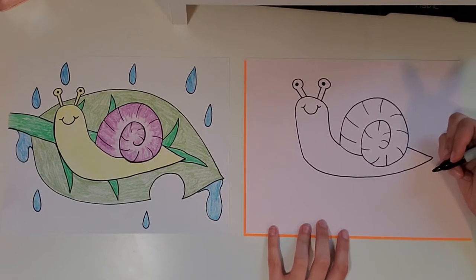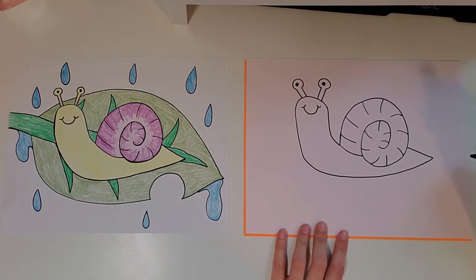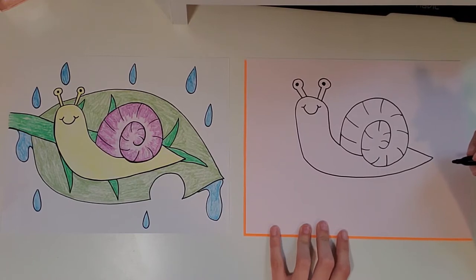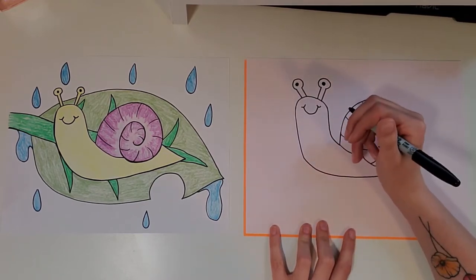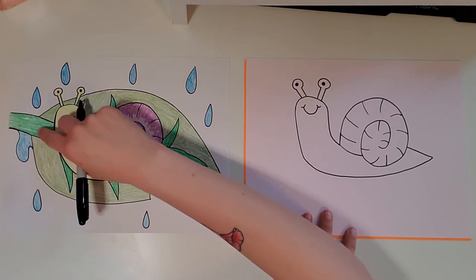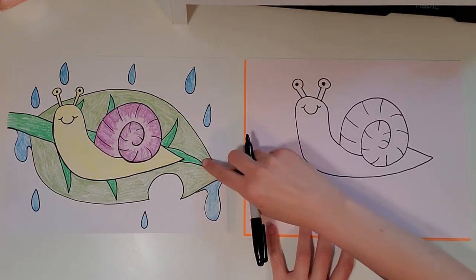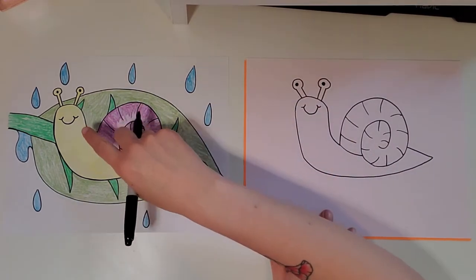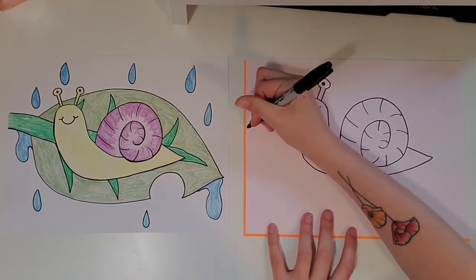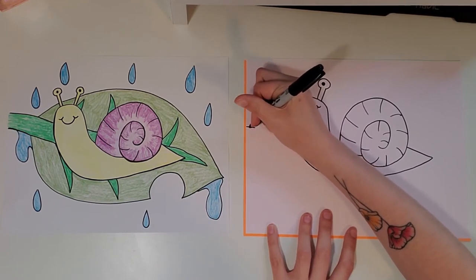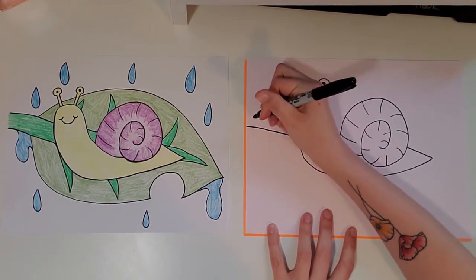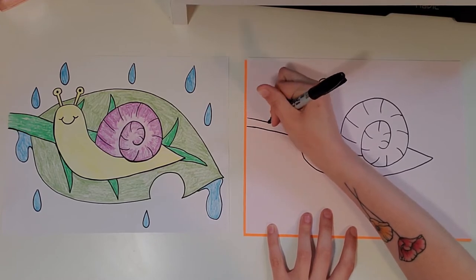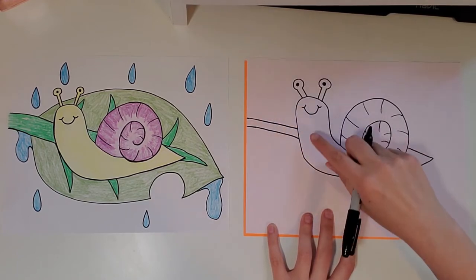Now what we're going to add is we're going to add in our leaf for our snail to be sitting on. Of course, your snail could be sitting in the grass or on a rock or something else. But I'm going to do the leaf since that's what I did on my example. The first thing I'm going to do is actually draw the stem and it goes behind the snail. So we're going to have to think a little bit. I'm going to make the stem on this one a little skinnier than I did on that one. So starting with just one line angles down a little bit and then I'm going to do another one right next to it.